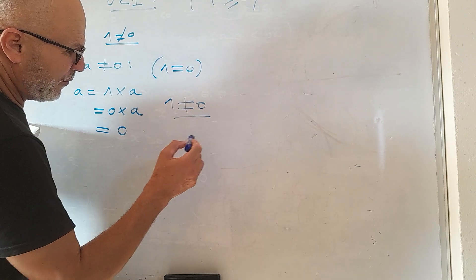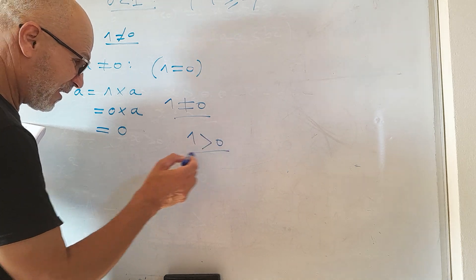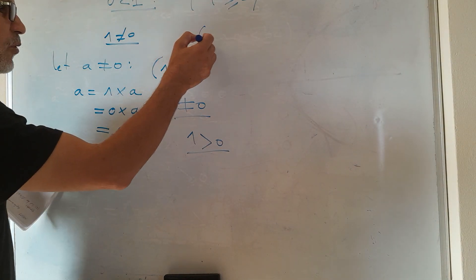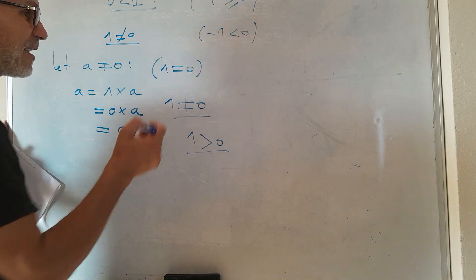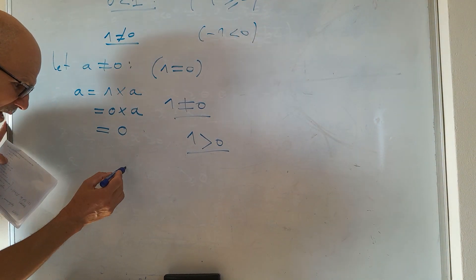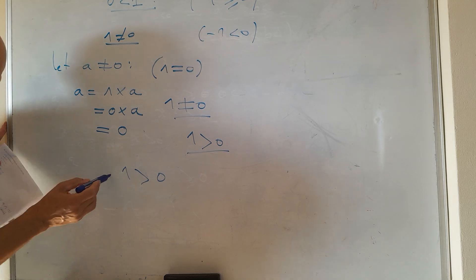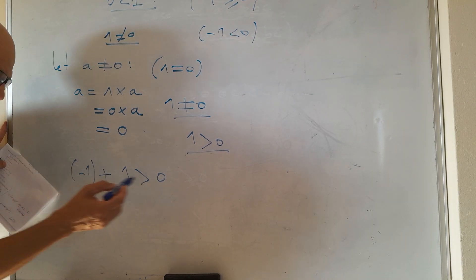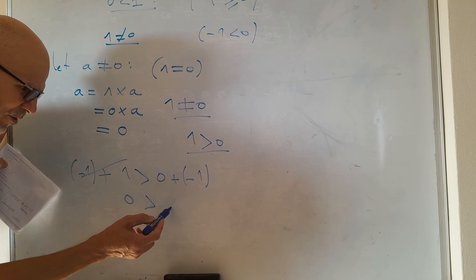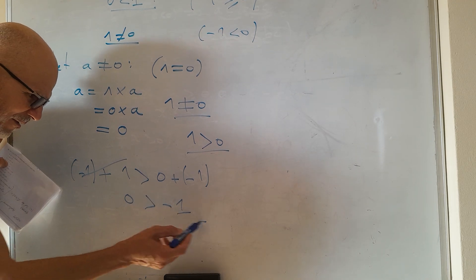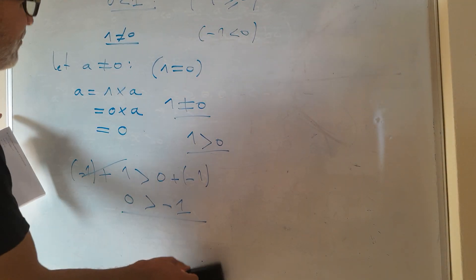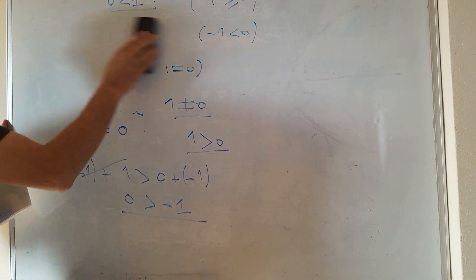How can we prove that -1 < 0? We have 1 > 0, and we add -1 to both sides. Using real number axioms, we get 0 > -1, which means -1 is less than zero.